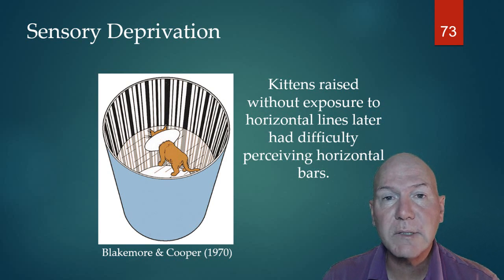When it was done vice versa, where the kittens were only exposed to horizontal lines, it was the same thing with vertical. The reason why is because their brain didn't get that information in order to make that visual image that actually represents the real world, the physical world out there.